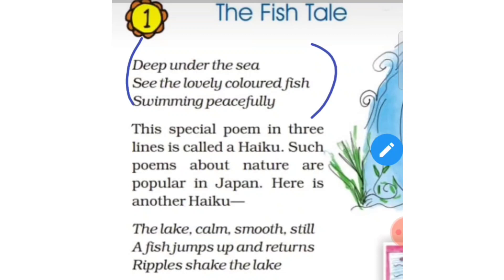Now here are some words. First is 'sea' and 'see'. These two are homophones. 'Sea' means a water body like a pond, lake, ocean, and many others. What about 'see'? 'See' means looking at something.